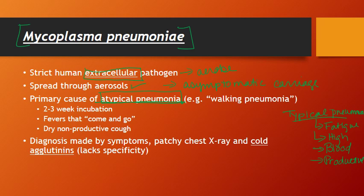With Mycoplasma pneumoniae, the fevers are going to come and go — they'll spike and then go away and then spike again. That'll likely be controlled somewhat by over-the-counter medication. With typical pneumonia the fevers are pretty consistent; that's another differentiating factor. And as mentioned, you have that dry non-productive cough.